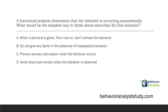B, do not give any items in the presence of maladaptive behavior — that sounds like a tangible function. C, prevent sensory stimulation when the behavior occurs — there we go. The way we put automatic behavior on extinction is to somehow block that reinforcing stimulation from the automatic behavior, which makes this very difficult to treat. D, avoid direct eye contact when the behavior is observed — that sounds like attention. The answer is C: prevent sensory stimulation when the behavior occurs.